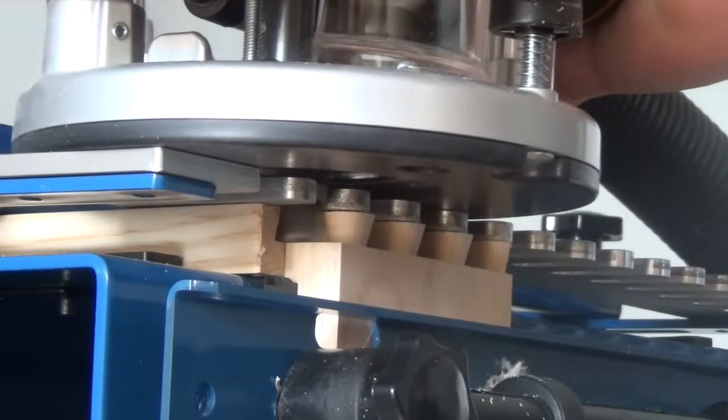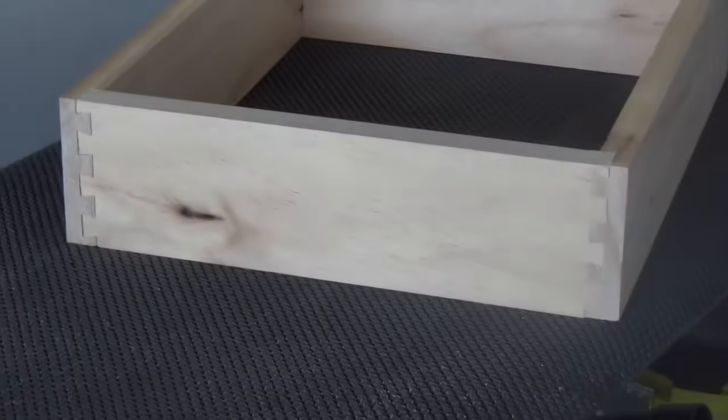Today we are going to set up and use the Balladonia Dovetail system to cut half blind dovetails for drawer sides.